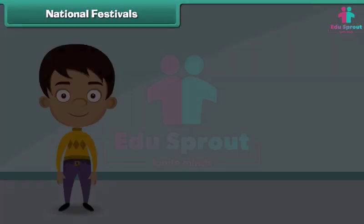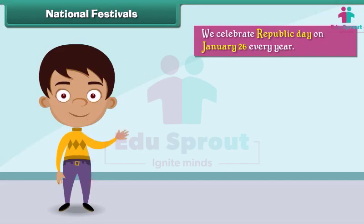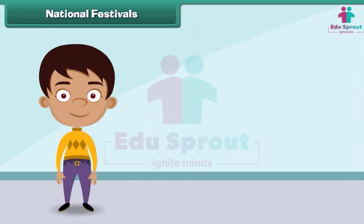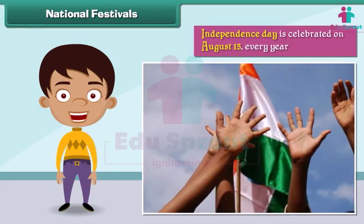We celebrate Republic Day on January 26 every year. On this day, the Constitution of India came into force. Independence Day is celebrated on August 15 every year. On this day, India got freedom from the British.